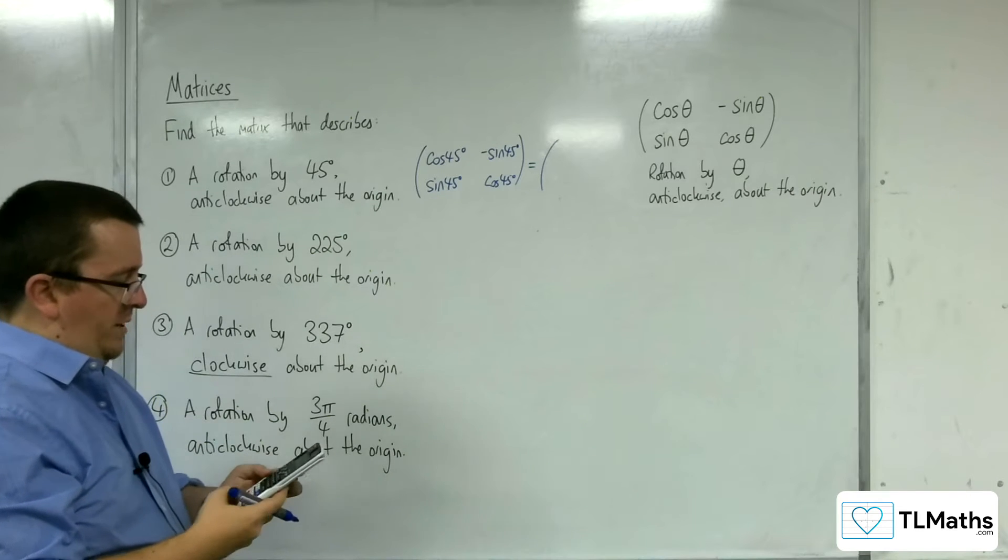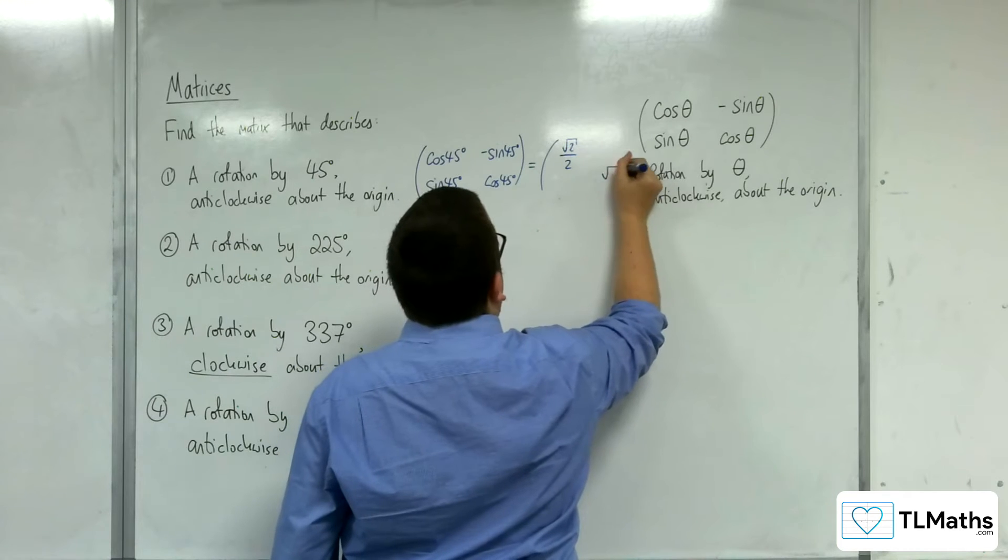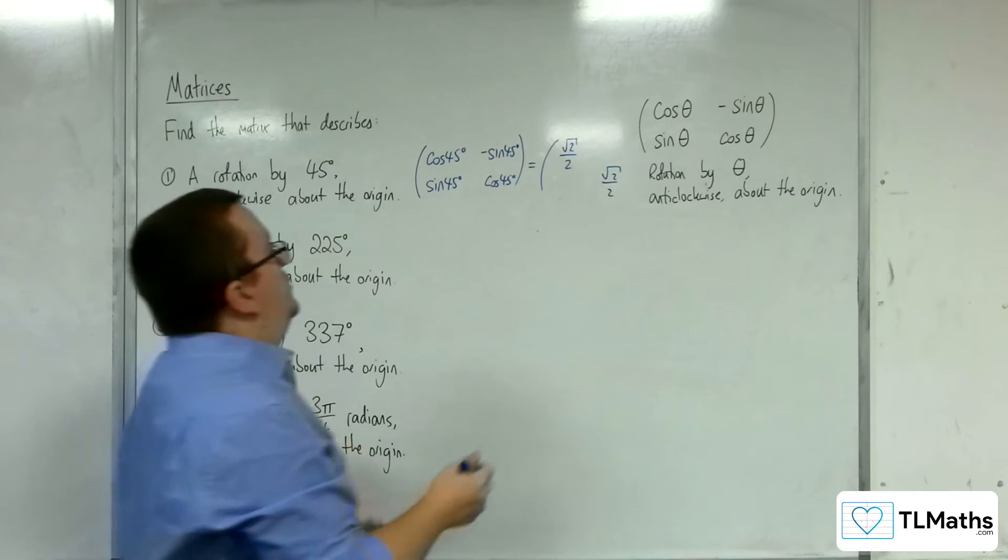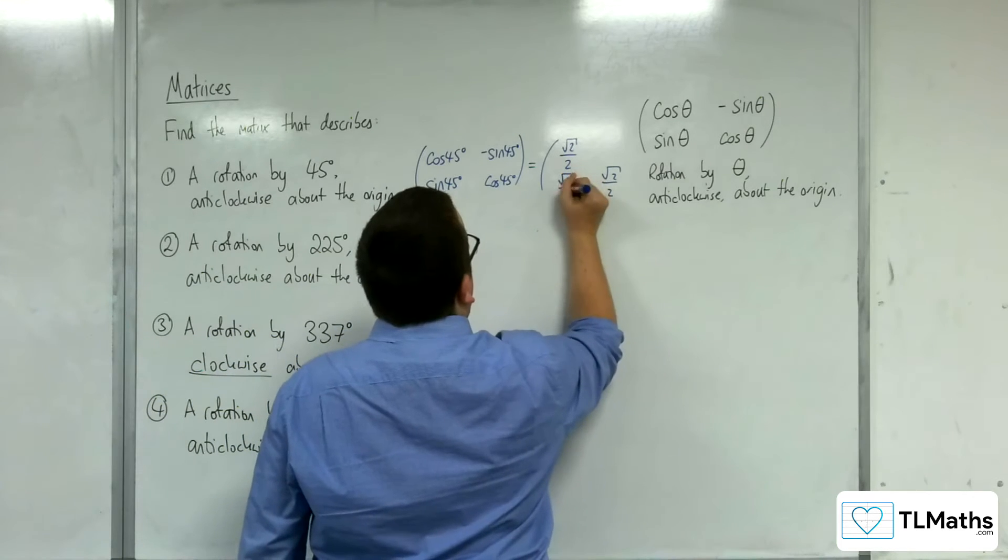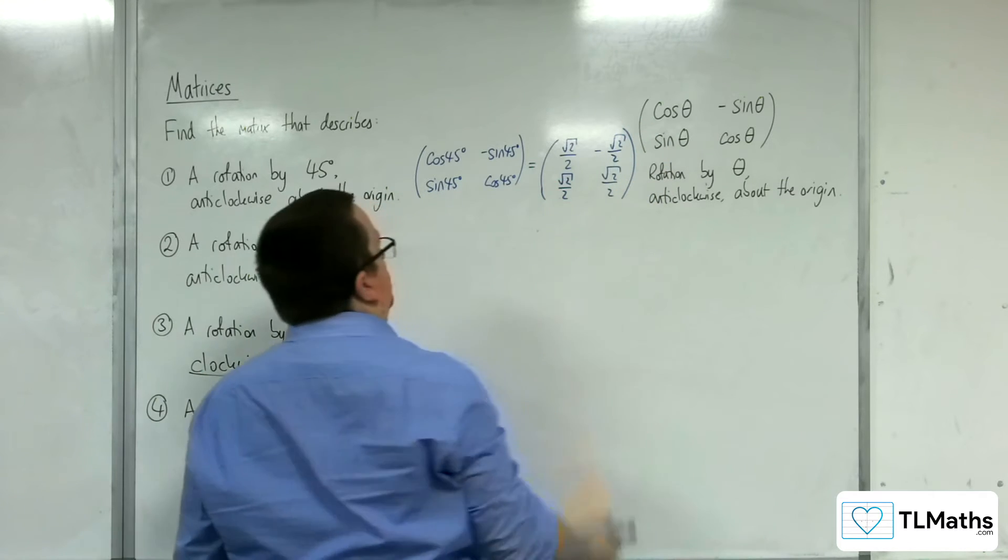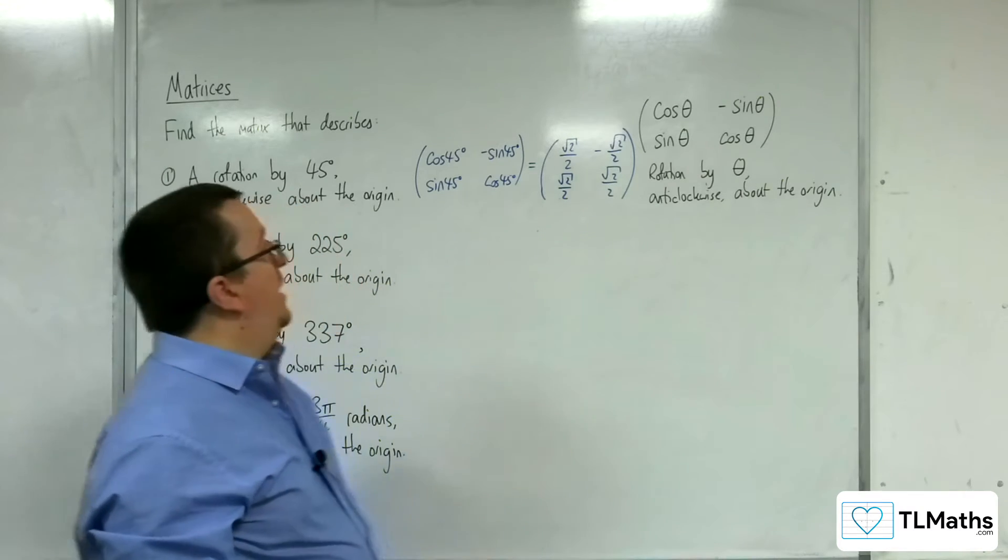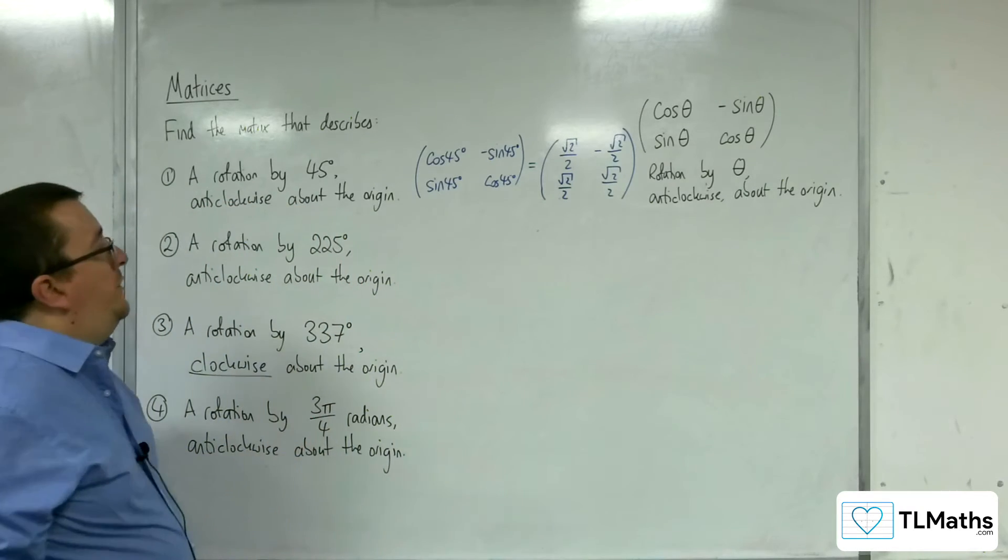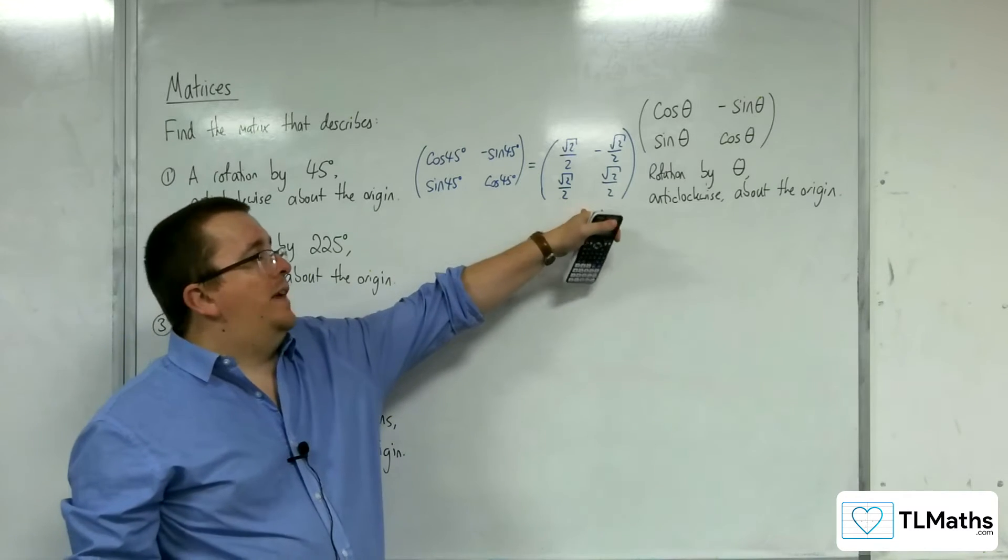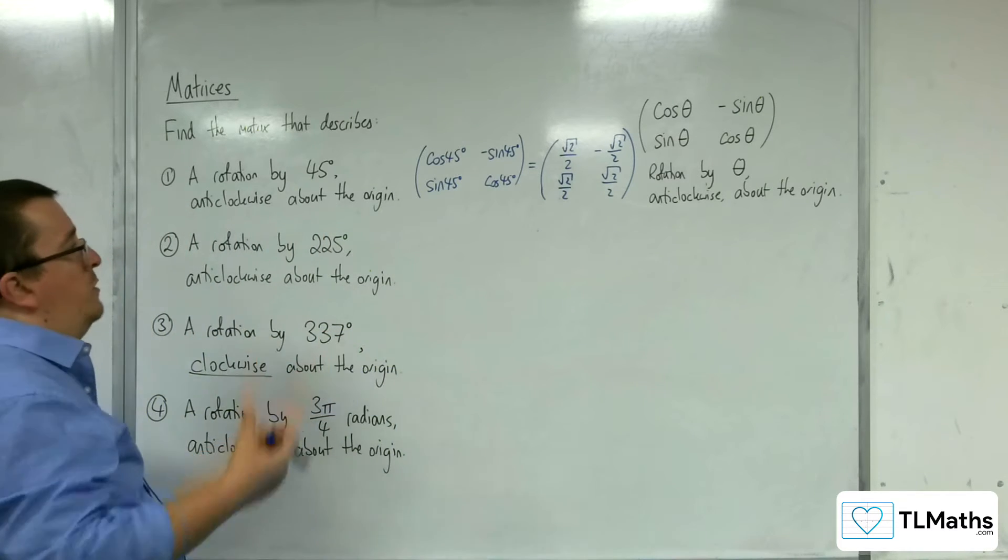So cosine of 45 degrees is root 2 over 2, that's top left and bottom right. And then sine of 45 is root 2 over 2 as well. And so there is our matrix. So that is the matrix that would describe a rotation by 45 degrees anticlockwise about the origin. If you applied that matrix to our rectangle shape that we've been using in the videos, then you would see it rotate round.